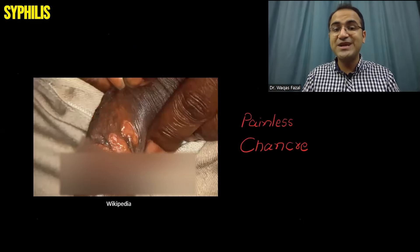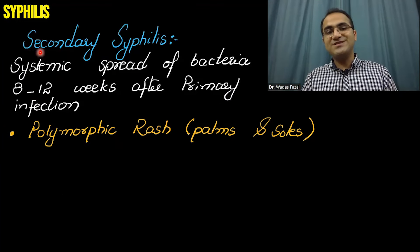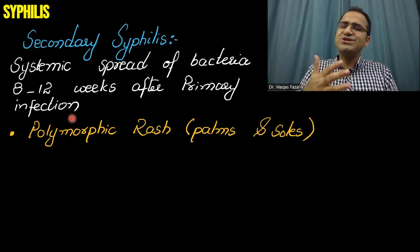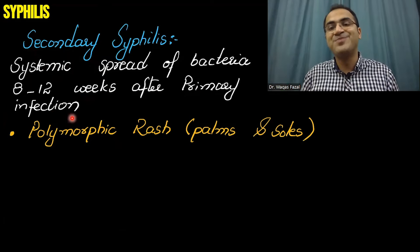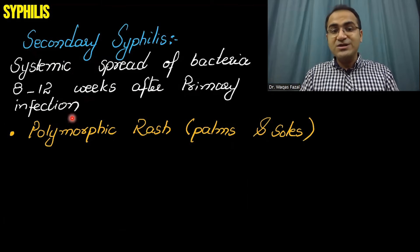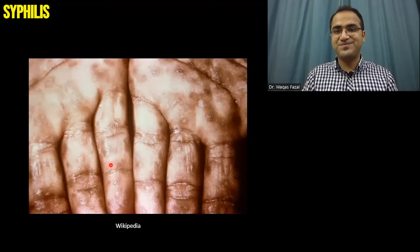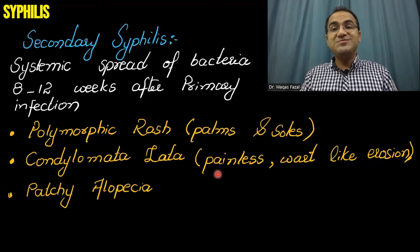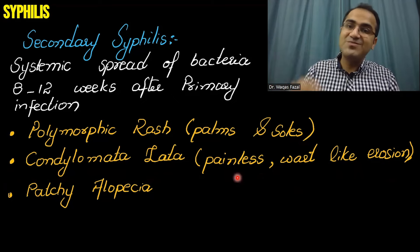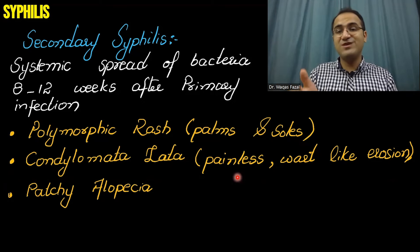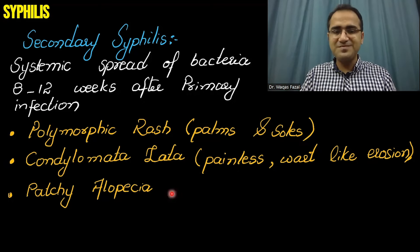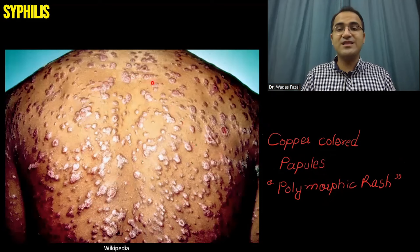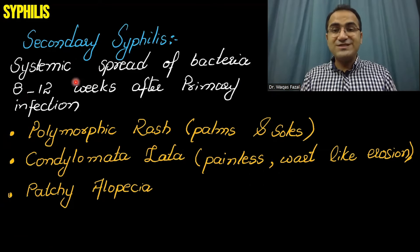This is a picture showing a painless chancre with indurated borders. In secondary syphilis, there is systemic spread of bacteria 8 to 12 weeks after the primary infection. The patient starts to develop a polymorphic rash with a copper color on the palms, soles, and body. You can also appreciate condyloma lata, which is a painless wart-like erosion around the anal canal — it is painless because endarteritis blocks the vessels supplying the nerves, causing the nerves to die. There can also be patchy alopecia. This picture shows the characteristic copper-colored papular rash of secondary syphilis.